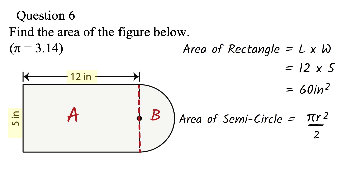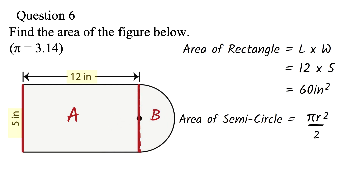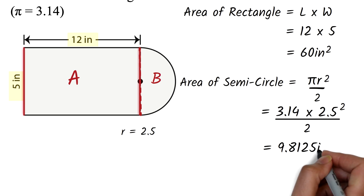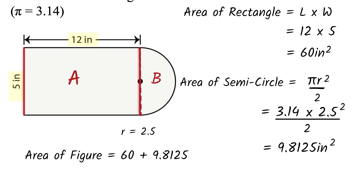We don't know r, but since this is a rectangle, if this side is 5 inches then the opposite side is also 5 inches, making the diameter of the circle 5. The radius is half the diameter, so 5 divided by 2 gives 2.5. Now we find the area of the semicircle: 3.14 times 2.5 squared over 2, which equals 9.8125 inches squared. Adding the two areas: 60 plus 9.8125 gives 69.8125, or 69.81 inches squared to two decimal places.